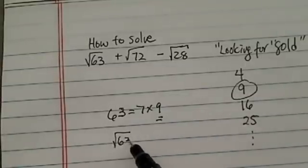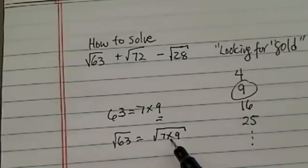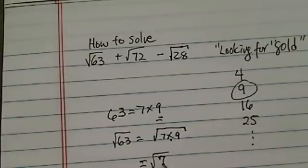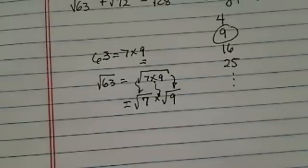So radical of 63 equal to radical of 7 times 9, and since it's multiplication, you're allowed to split it up. So multiplication, and each one of them has their own house, if you want to think that way.